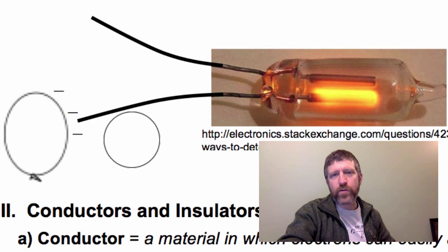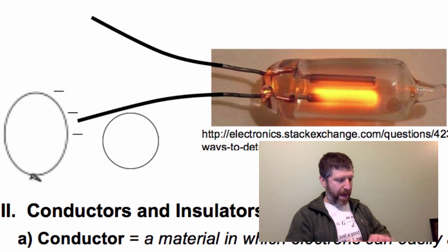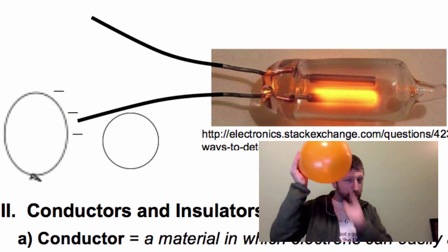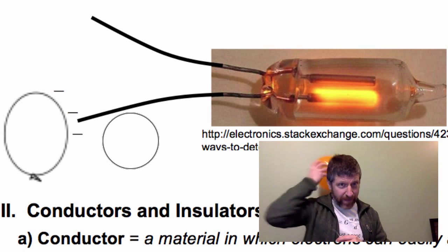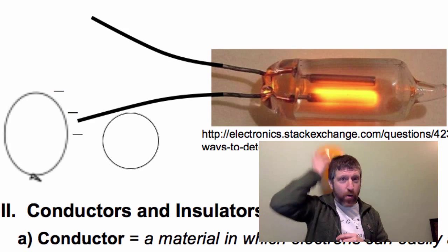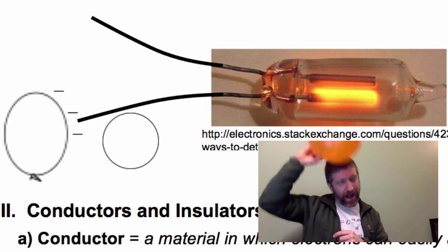So when I did this with a balloon, I found that when I rubbed the balloon on my head like so, the balloon turned negative. Now we can use this balloon as a guide to determine what signs of charge other objects are.